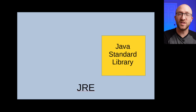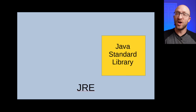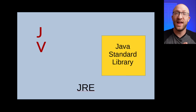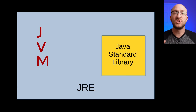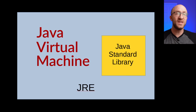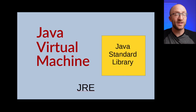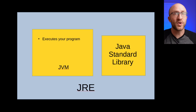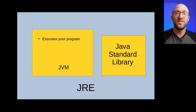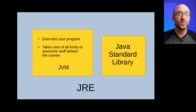The other very important part of the JRE is another one of our J acronyms — the JVM. JVM stands for Java Virtual Machine. The Java Virtual Machine is simply responsible for executing a Java program. It loads up all the bytecode from your .class files that you generated by compiling your .java files, loads them all up into memory, and runs your program. What's cool about that is all the hidden stuff it does behind the scenes to help your program run smoothly that you never even need to be aware of.